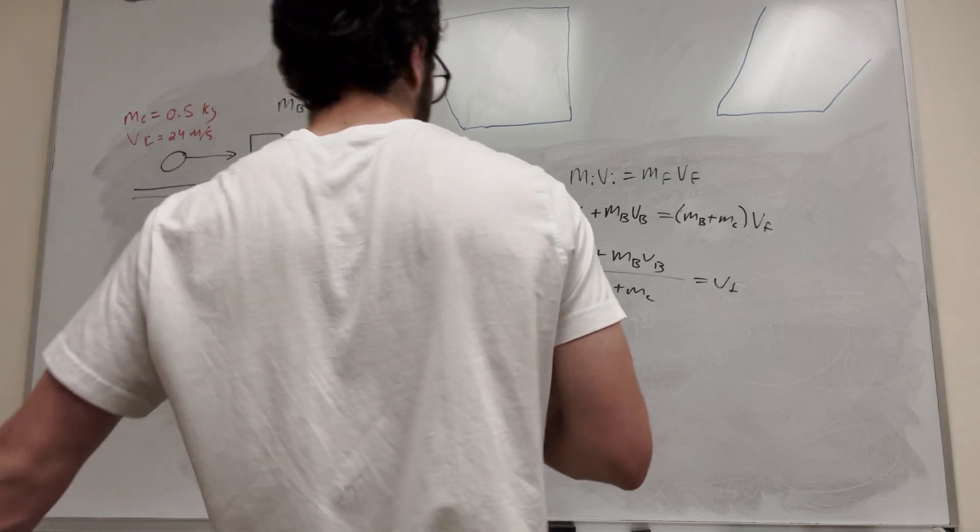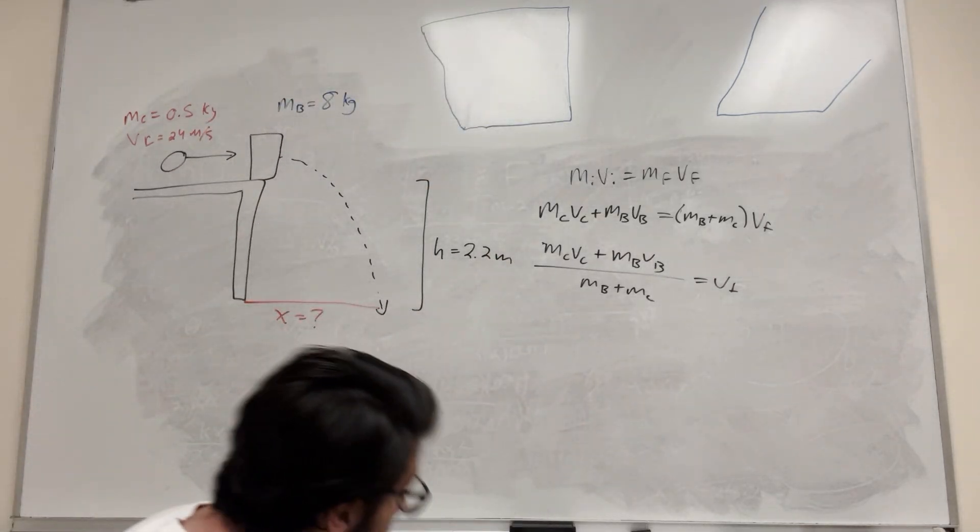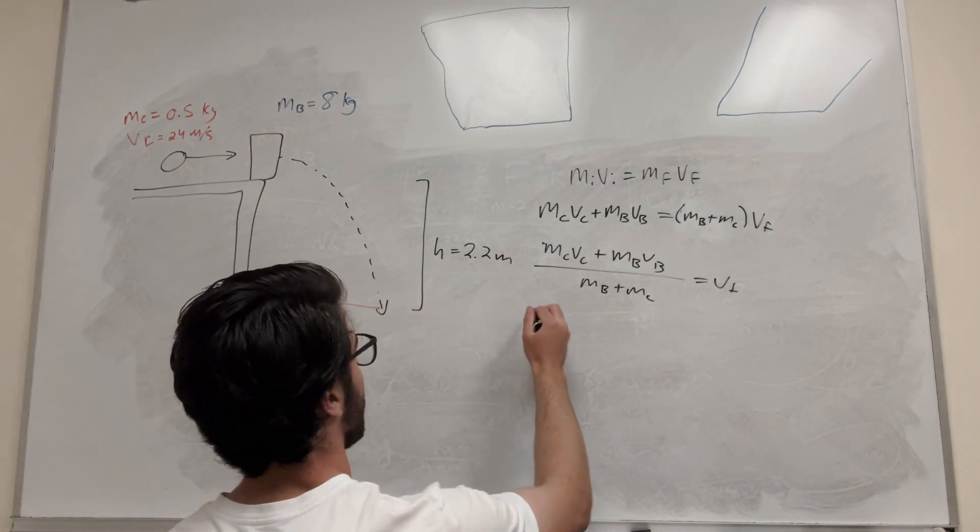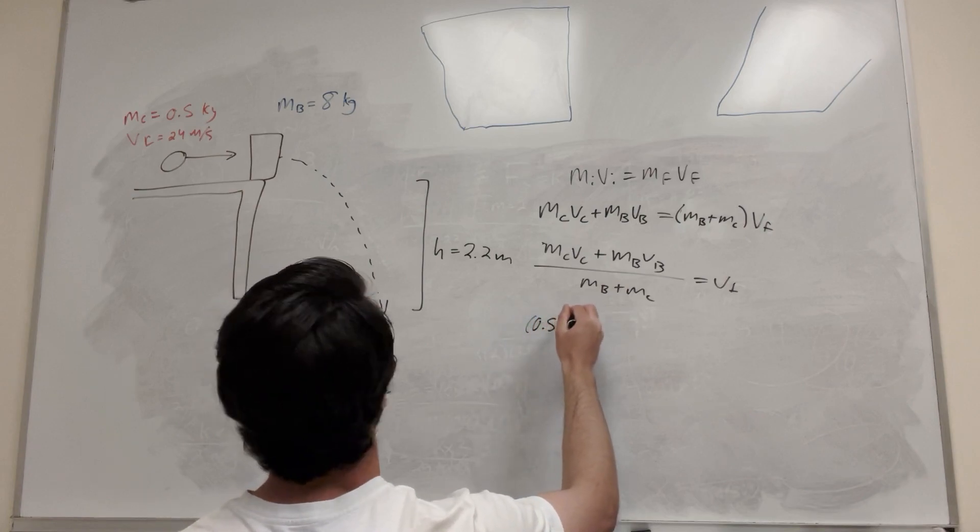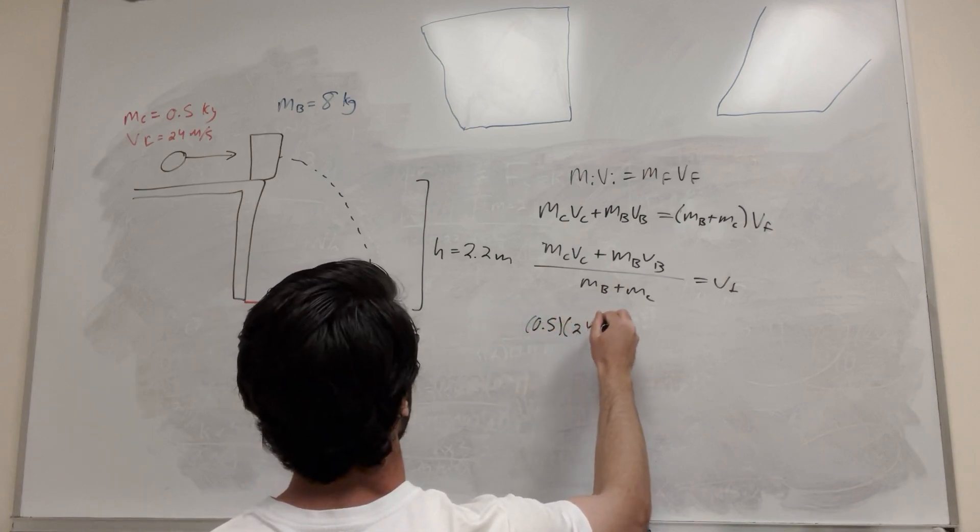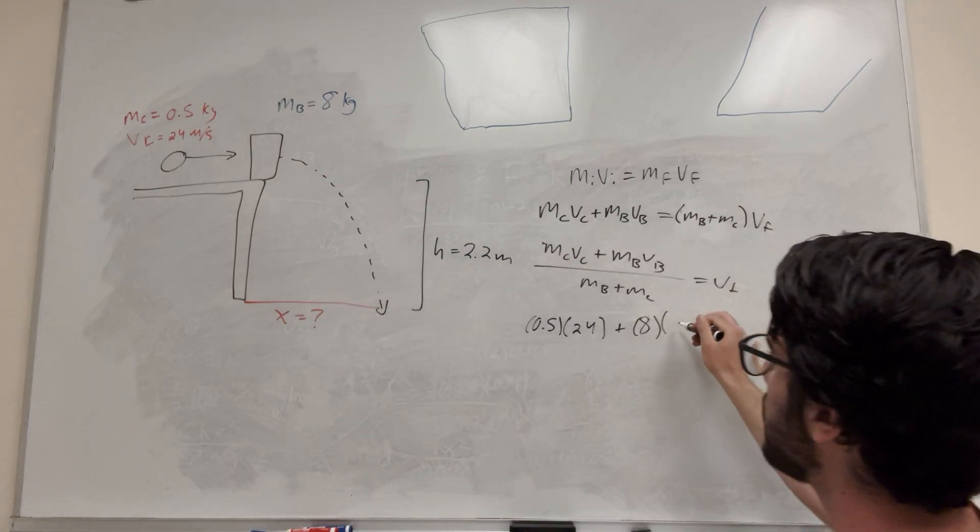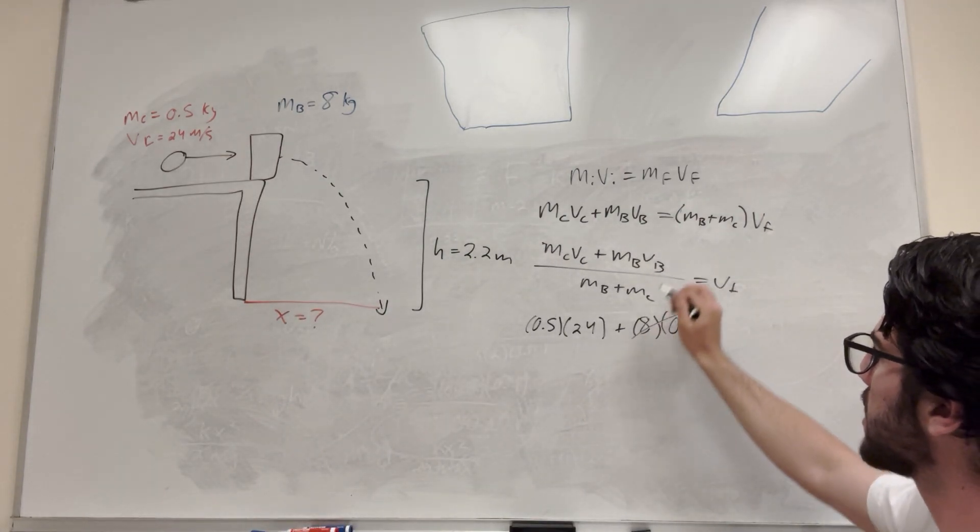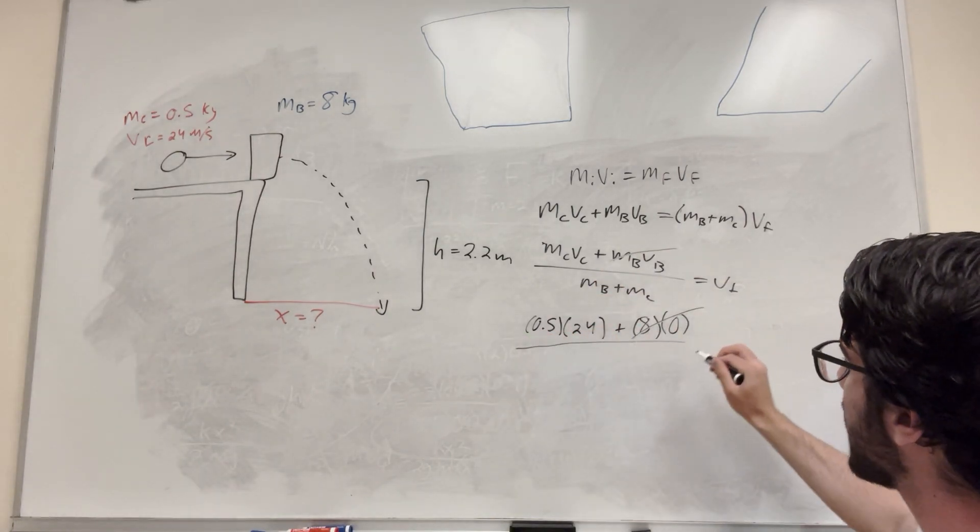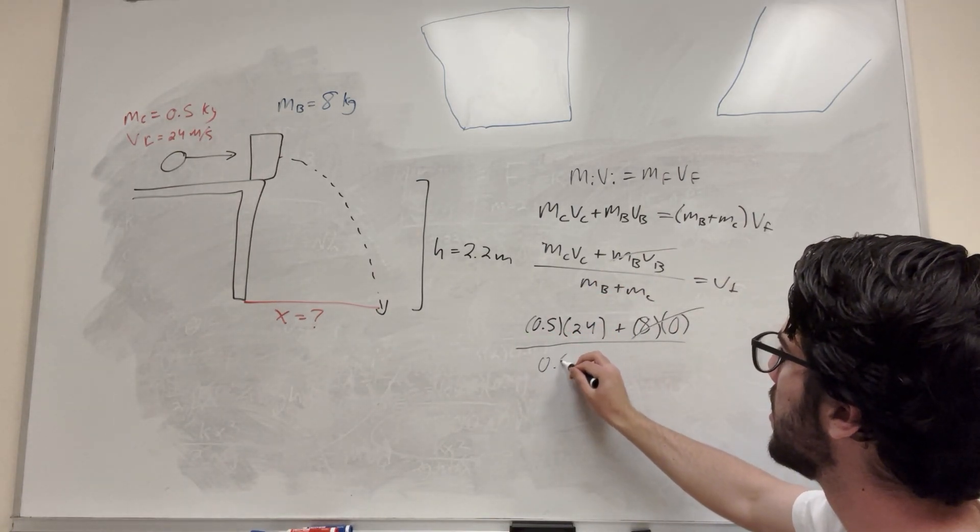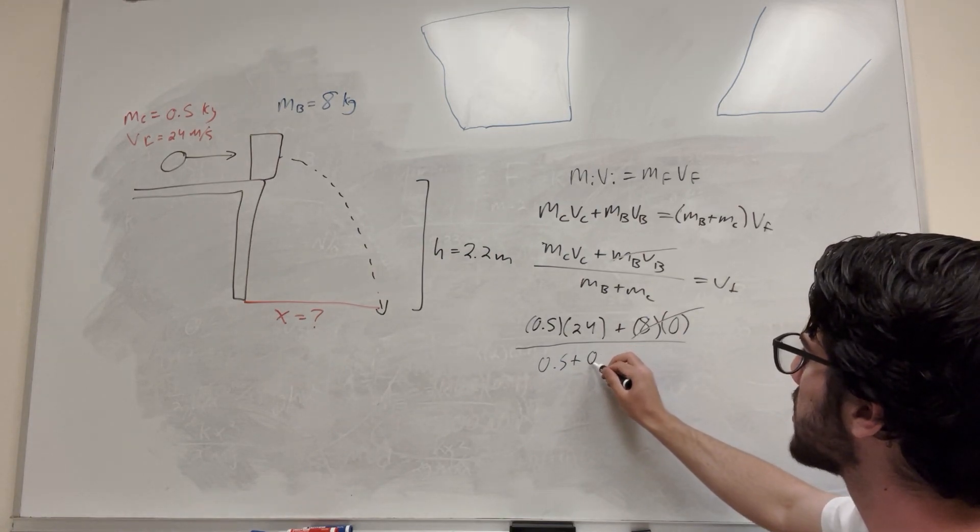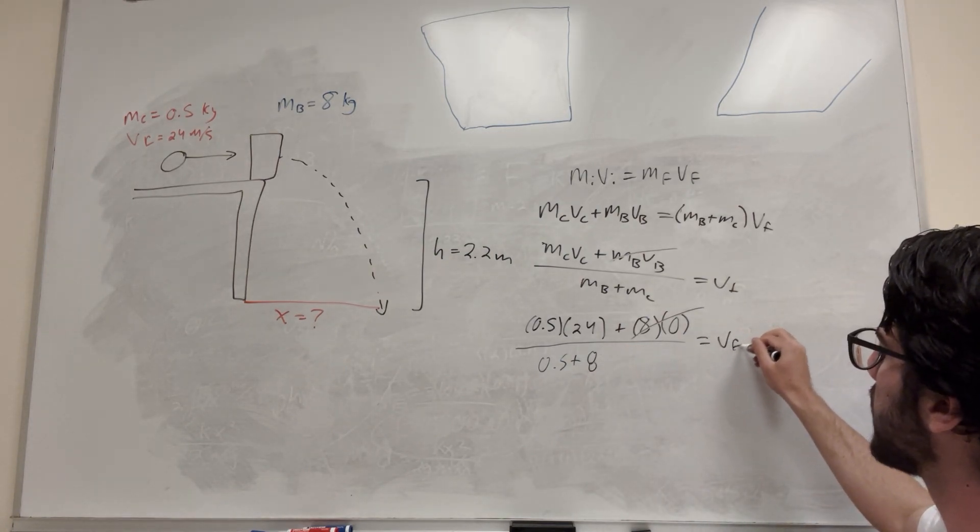Let's do it. So if we're trying to find velocity of the final, let's go ahead and divide it. So it's going to be mass clay velocity of clay, plus mass of the block velocity of the block, over mass of the block plus mass of the clay. And that's equal to the velocity of the final. We have all this stuff, let's go ahead and plug it in.